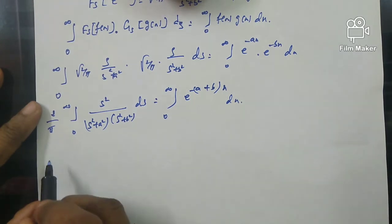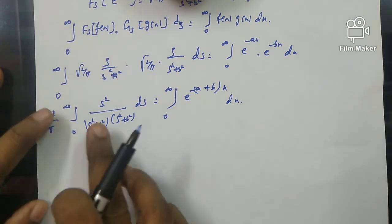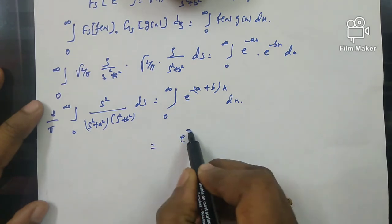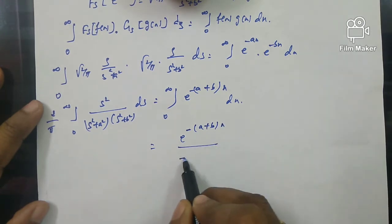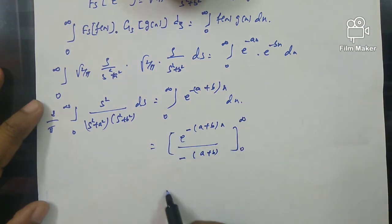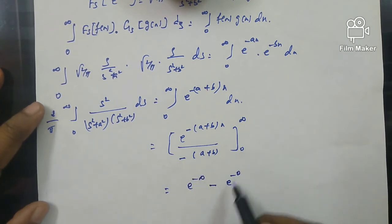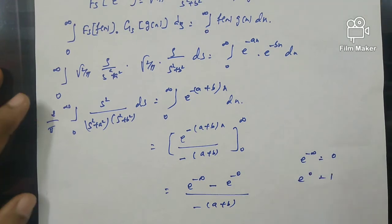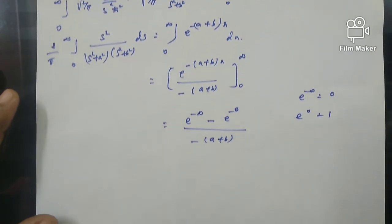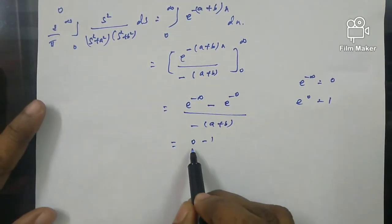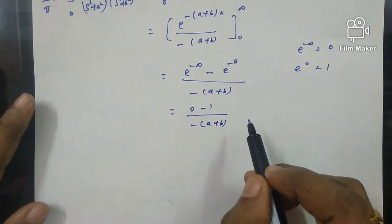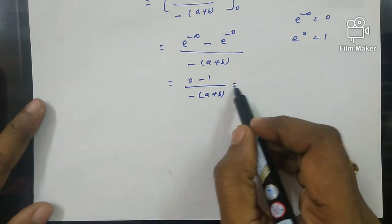Now we integrate the right-hand side. The integral of e^(−(a+b)x) from 0 to infinity equals [e^(−(a+b)x) / (−(a+b))] evaluated from 0 to infinity. Applying the upper limit, e^(−∞) = 0, and the lower limit, e^0 = 1. So we get (0 − 1)/(−(a+b)), and the two negatives cancel, giving 1/(a+b).